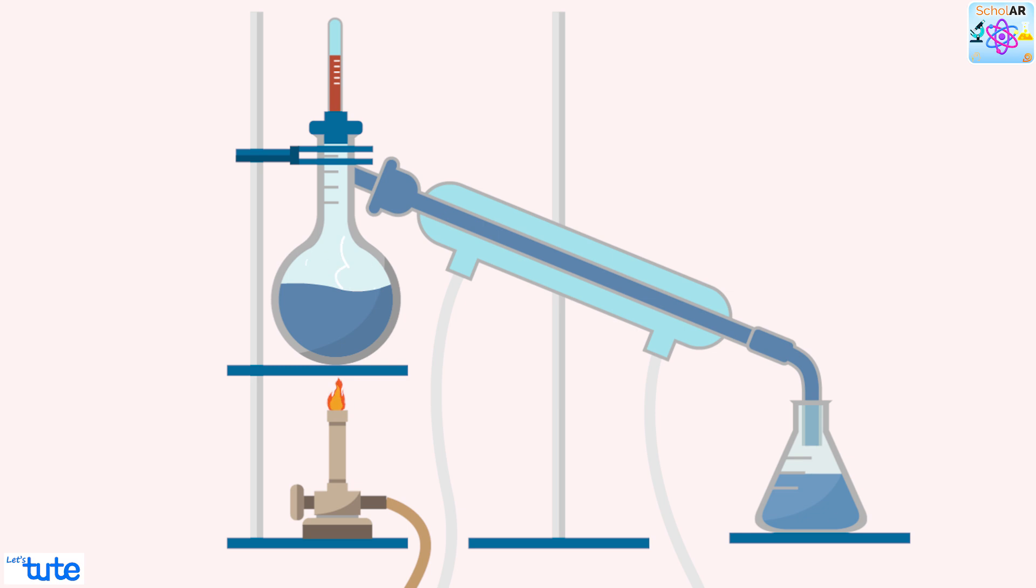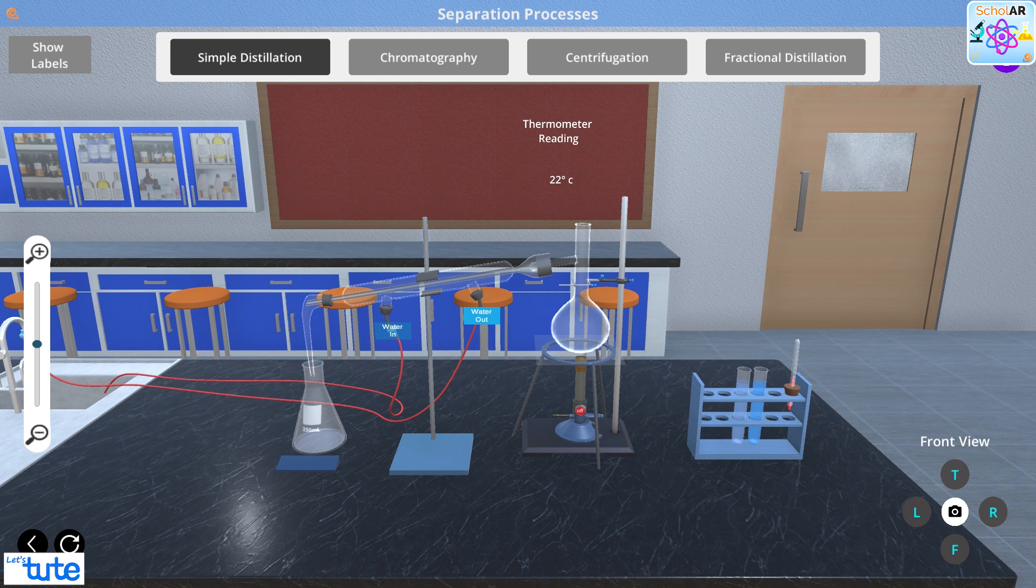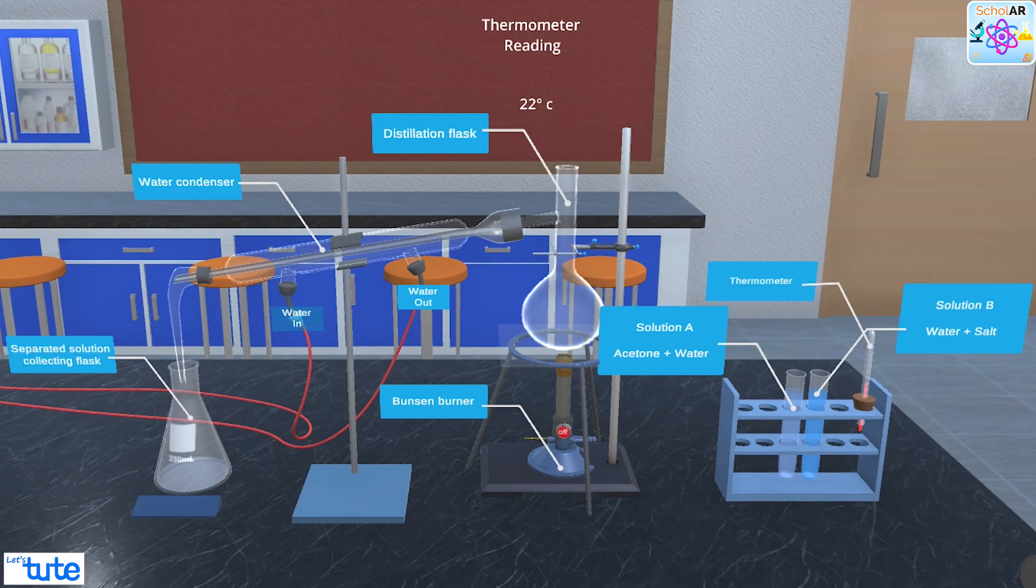Now that we know the principle of distillation, let's jump to the simulator in order to see the whole setup and the process of distillation. We can see on the screen a setup for simple distillation process. By clicking on labels, we can see what all apparatus that we have on the table here.